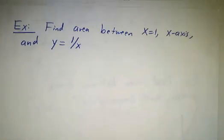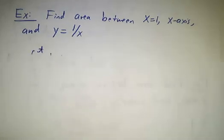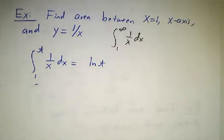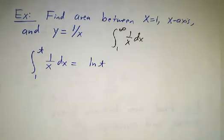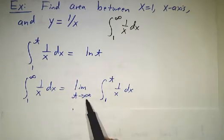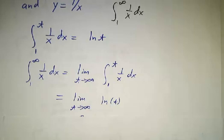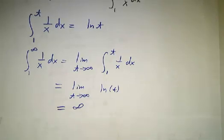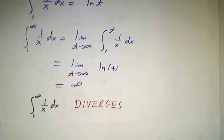Now, at first glance, finding the area between x equals 1, the x-axis, and y equals 1 over x looks kind of the same. We want the integral from 1 to infinity of 1 over x dx. We take the integral from 1 to t of 1 over x dx — that's just the natural log of t. The integral from 1 to infinity is the limit of the natural log of t, but as t gets bigger and bigger, the natural log gets bigger and bigger. This limit is infinity, there's an infinite amount of area, and so when the limit doesn't exist, we say the integral diverges.